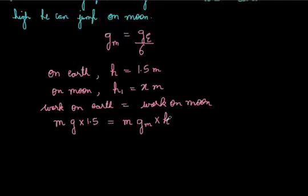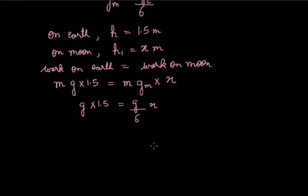So on equating both we get: g × 1.5 = (g/6) × x. The g's cancel, giving 1.5 × 6 = x, so x = 9 meters. If that man jumps on the Moon, he will be jumping to a height of 9 meters.